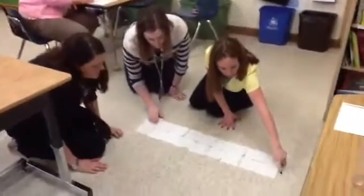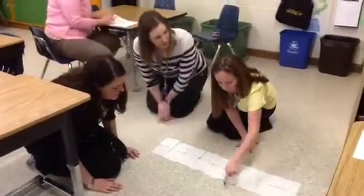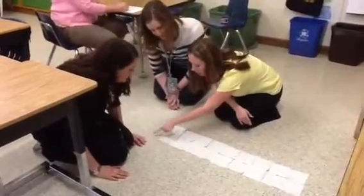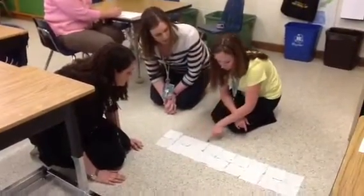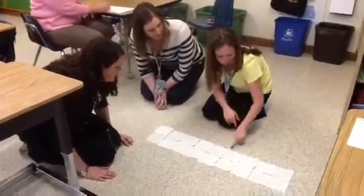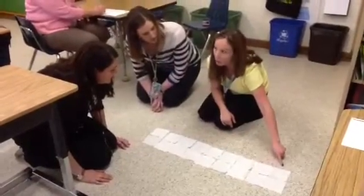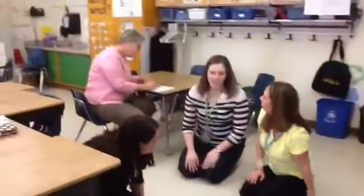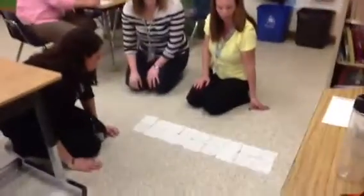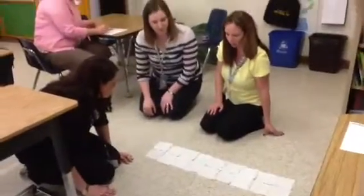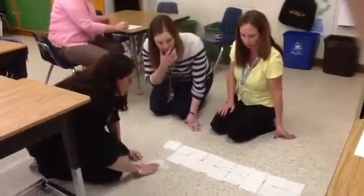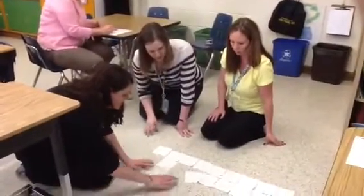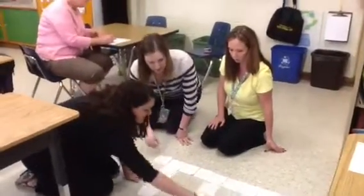One, two, three, four, five, six, seven, eight, nine, ten, eleven, twelve, thirteen, fourteen, fifteen, sixteen, seventeen, eighteen, nineteen, twenty, twenty-one, twenty-two. Oh. Wow. How did that happen?